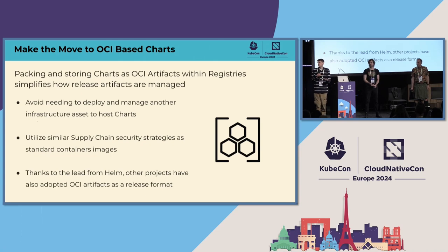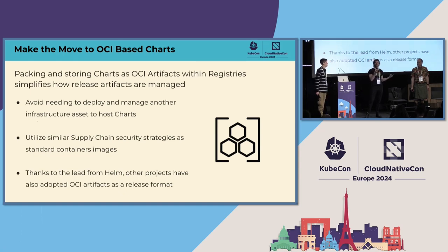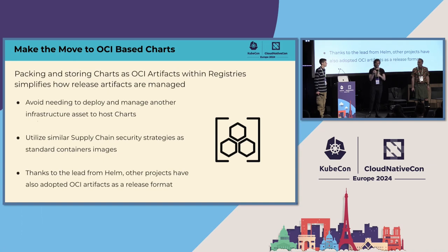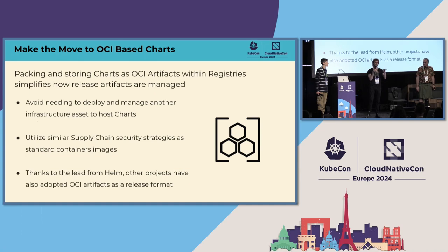Pretty much anything that makes working with containers secure also applies to the OCI artifact type. You're all at KubeCon so containerized workloads is not a new concept. For config-as-code, that's essentially what OCI artifacts are — anything you want to store there you can, and you can deploy configuration alongside your containers. That's the basic idea.